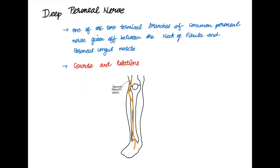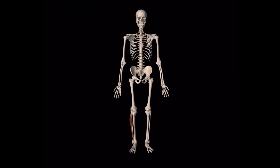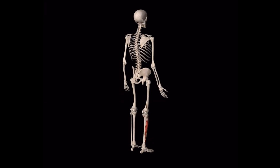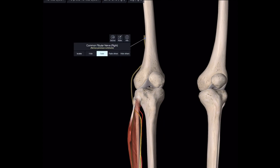Coming to the deep peroneal nerve — it is one of the two terminal branches of the common peroneal nerve, given off between the neck of fibula and the peroneus longus muscle. It is the nerve of the anterior compartment of the leg and the dorsum of the foot. The deep peroneal nerve begins on the lateral side.